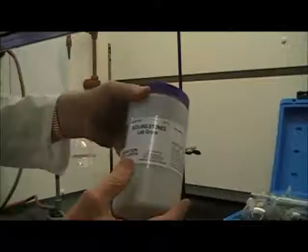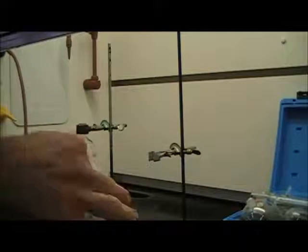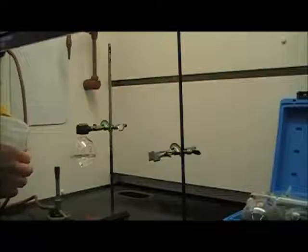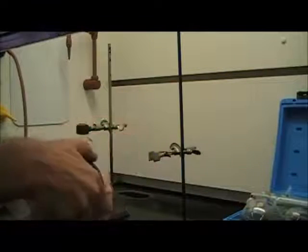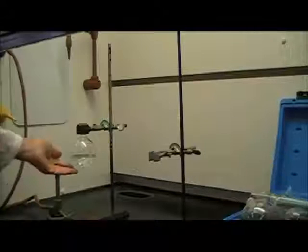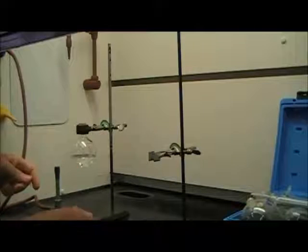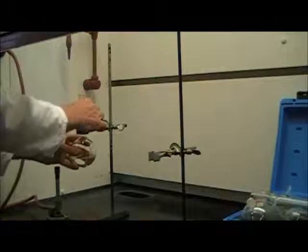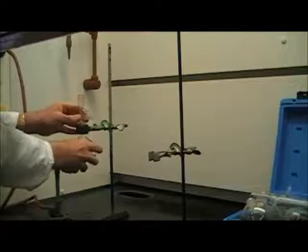I'm also going to add some boiling chips. These are little pieces of porous material that don't react with the solution. They just serve as jagged surfaces for bubbles to form on, so that the boiling occurs smoothly. So I put my liquid in, I put some boiling chips in. I'm going to put the still head on. Notice that the ground glass pieces fit together perfectly, so we don't need to use any grease.